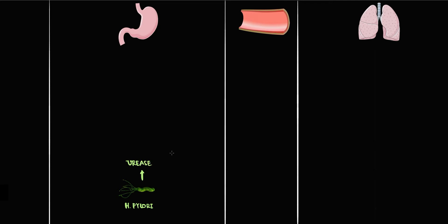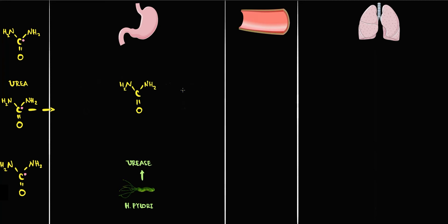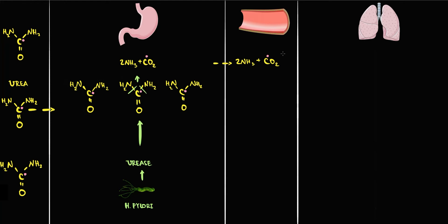To assess the amount of Helicobacter pylori in the stomach, we give the patient a solution with urea — but it's not simple urea. It's urea molecules with radiolabeled carbon. When such urea molecules enter the stomach, Helicobacter pylori's urease enzyme degrades the urea into two ammonia molecules and carbon dioxide with radiolabeled carbon. Then we absorb the ammonia molecules and carbon dioxide into the blood, where carbon dioxide goes into the lung capillaries and is removed from the blood by exhalation. Because it's carbon dioxide with radiolabeled carbon, we can assess the amount of carbon dioxide molecules in the breath.